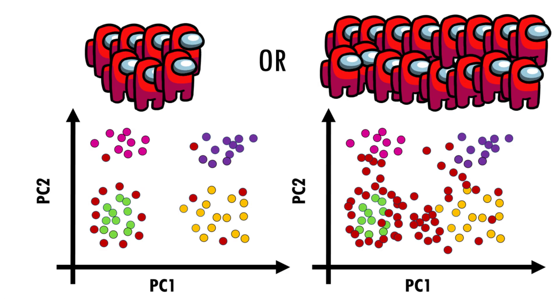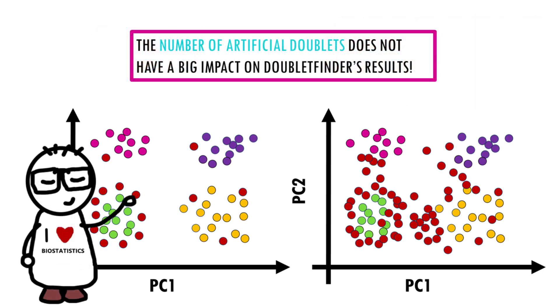But wait a minute—obviously the PCA and the proportion of doublets depends on how many doublets you generate at the beginning, right? Well, actually not really. The authors found that the results don't really change with this parameter pANN or the number of fake doublets you introduce. The default is set to 25%, but if you use DoubletFinder you can fine-tune that if you want.